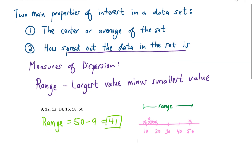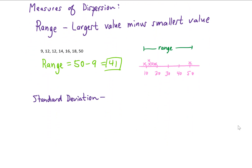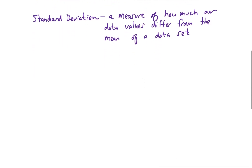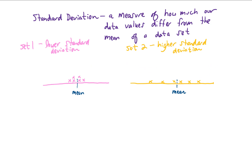Our next measure of dispersion is called the standard deviation. The standard deviation of a data set gives us some idea of how much our data values differ from the mean. For example, if two data sets have the same mean but the values in set 1 stay close to the mean while the values in set 2 are more spread out, then set 1 has a lower standard deviation than set 2.